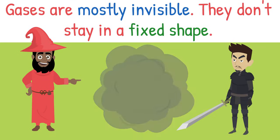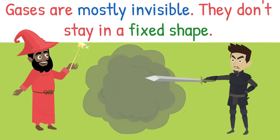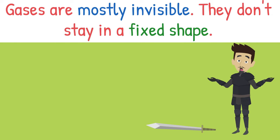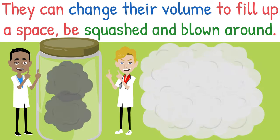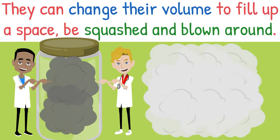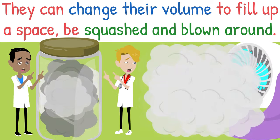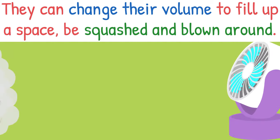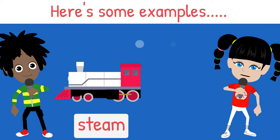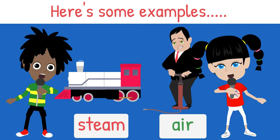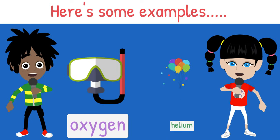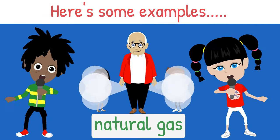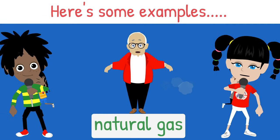Gases are mostly invisible. They don't stay fixed in a shape. They can change their volume to fill up a space, be squashed and blown around. Here's some examples: steam is gas, air is gas, oxygen is gas, helium is gas, and don't forget there's natural gas.